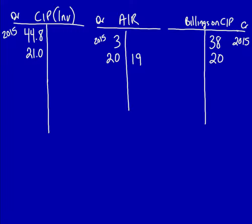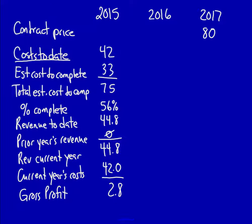Now that we've recorded all entries that occurred during 2016, we're standing at the end of 2016. We can now complete our chart for 2016. For purposes of the chart, we actually need the costs to date: $63 — that's the total for 2015 and 2016. Estimated costs to complete are the costs we expect in 2017: $21. Estimated total cost to complete is the addition of these two numbers, therefore $84. The next step is always the same: compare the total estimated cost to the selling price of the contract. Total costs are $84, and the selling price is $80. That means on this construction contract, we'll have a loss of $4.